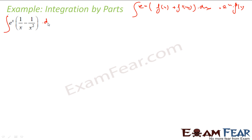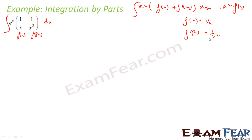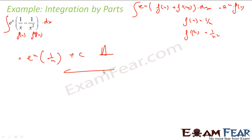We have to find the integration of this with respect to dx. We can clearly see that if f(x) is 1/x, then f'(x) is nothing but −1/x². So the answer is e^x times f(x), that is 1/x, plus a constant. Just by looking at the question I can identify the form.